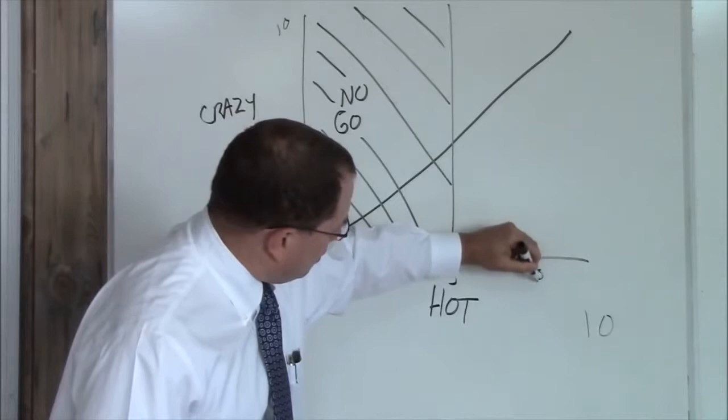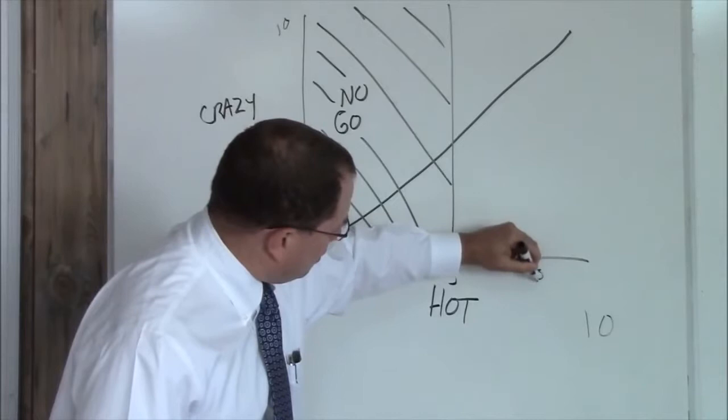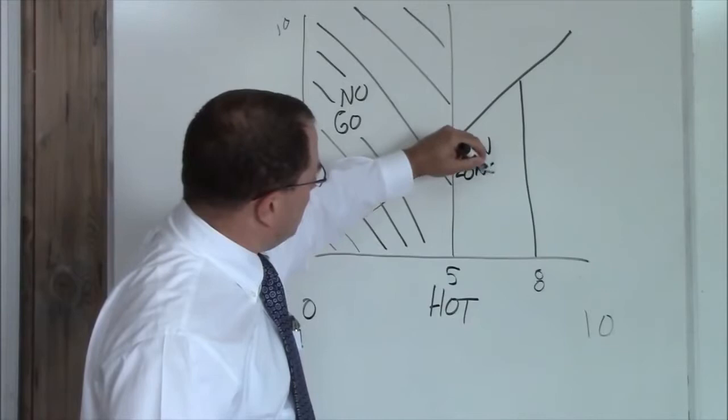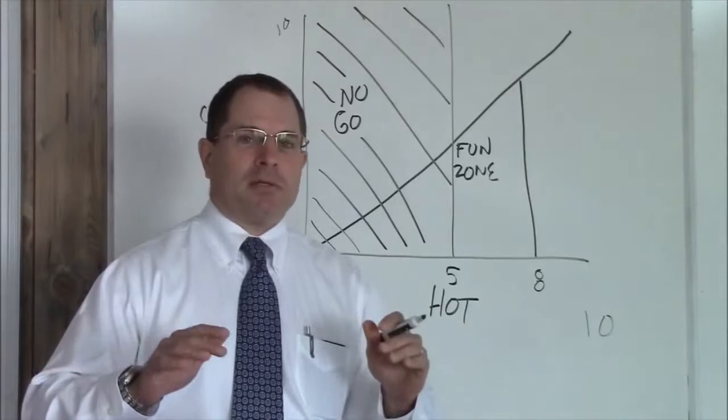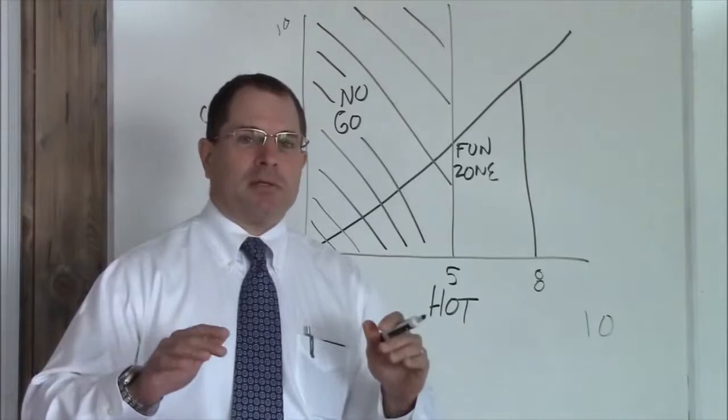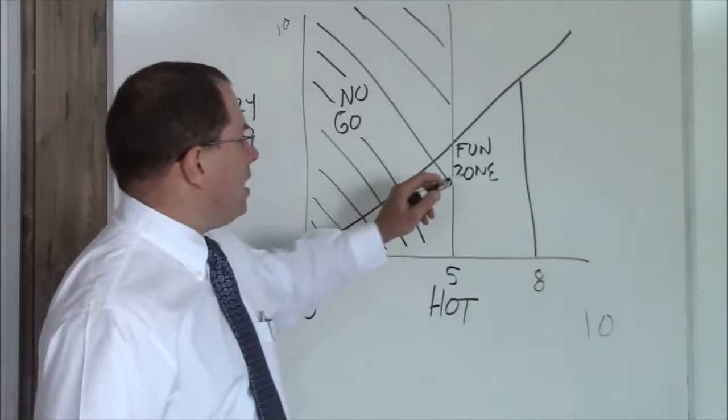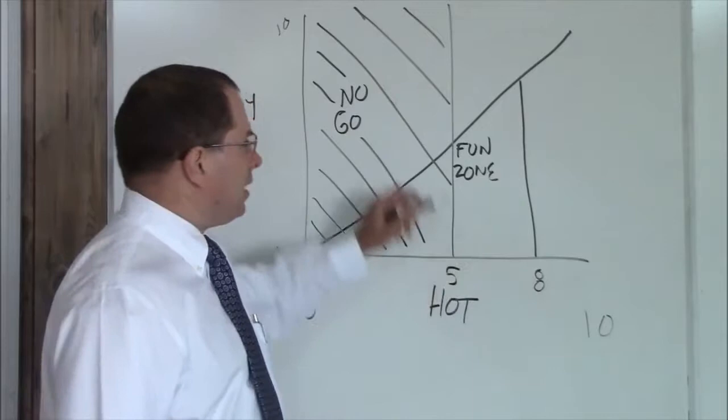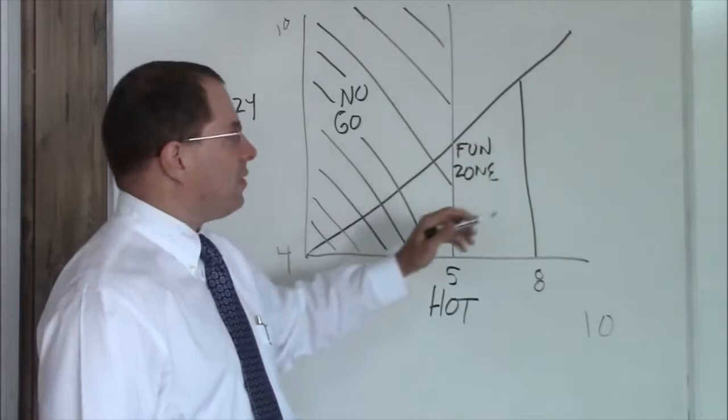Above a 5 and to about an 8 and below the crazy line, this is your fun zone. You can hang out here and meet these girls and spend time with them. That's your fun zone. But keep in mind when you're in the fun zone, you want to move out of the fun zone to a more permanent location. So that's the fun zone above a 5 hot, below an 8 hot, and below the crazy line. This means these are most of the time not crazy.